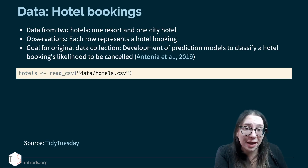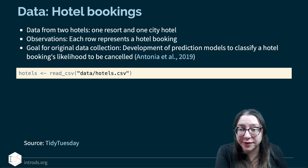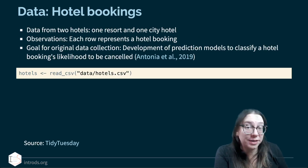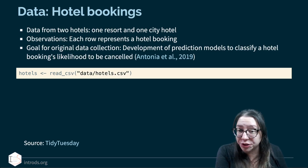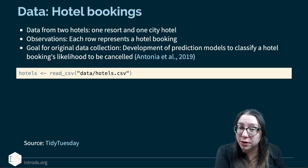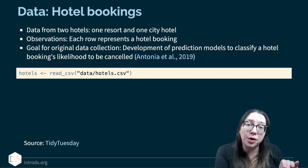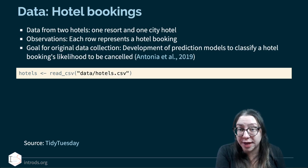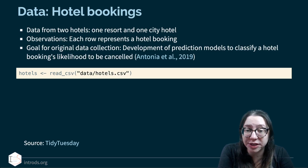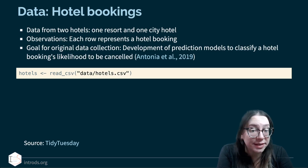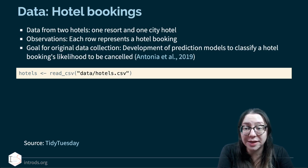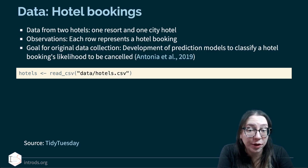The dataset we're going to use as an illustrative example is on hotel bookings. We have data on two hotels: a resort hotel and a city hotel. Each row in the dataset represents a hotel booking. The original goal of the data collection was the development of prediction models to classify a hotel booking's likelihood to be canceled.